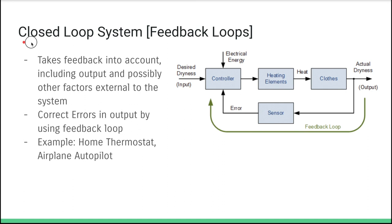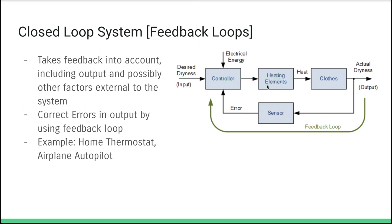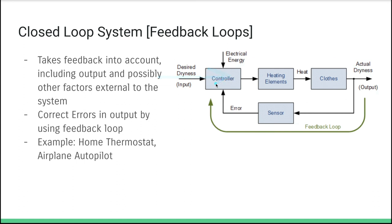A closed loop system is where we engage with feedback. Take a dryer as an example. We have some initial desired dryness — we tell the dryer what we want. That initial input is sent to our microprocessor, which sends a signal to the heating elements to heat the clothes. Based on the dryness detected by a sensor, a signal is sent back to the controller. The controller compares current dryness versus desired dryness, and sends another signal to the heating elements — either to do nothing or continue drying until we reach the desired dryness. We continue to run the system, adjusting the operations of our actuator based on how close we are to the desired result.